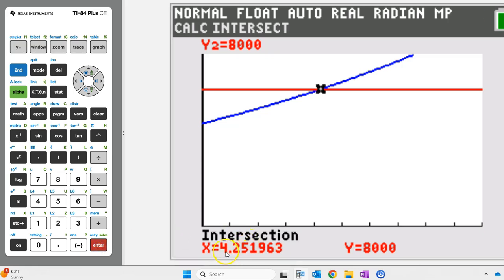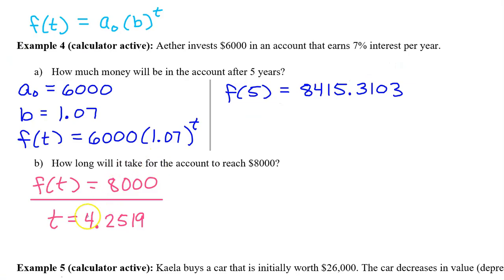Move the pointer close to the point of intersection and hit enter three times. And there it is: 4.2519. It will take 4.2519 years for Ether's account to reach $8,000.